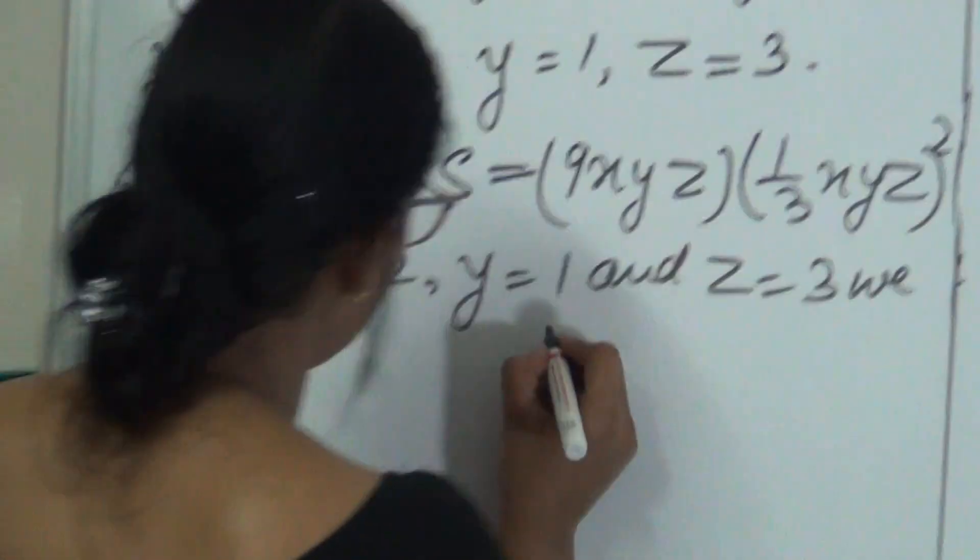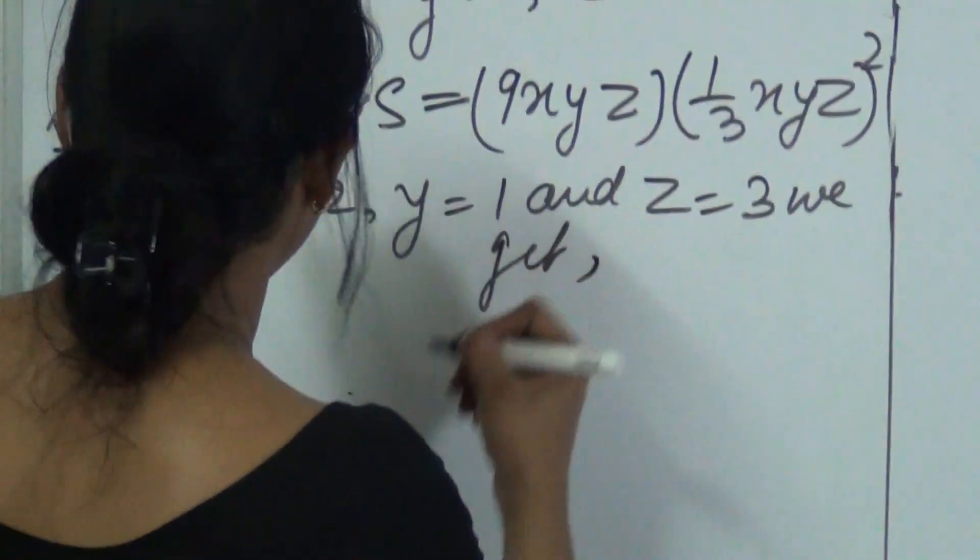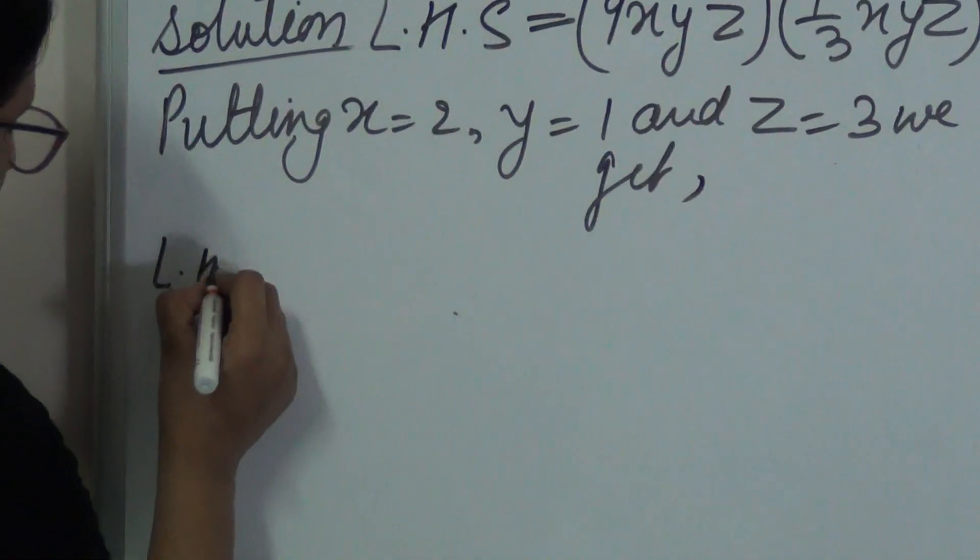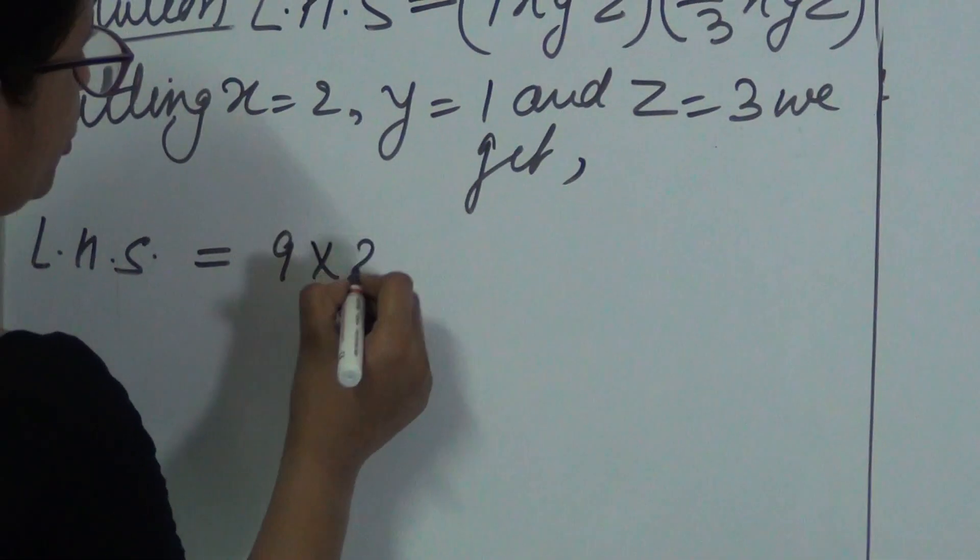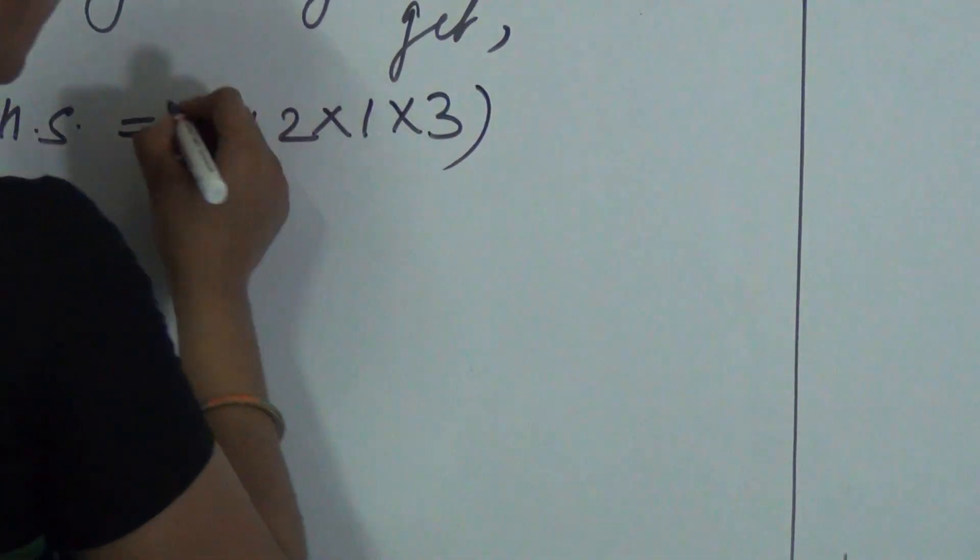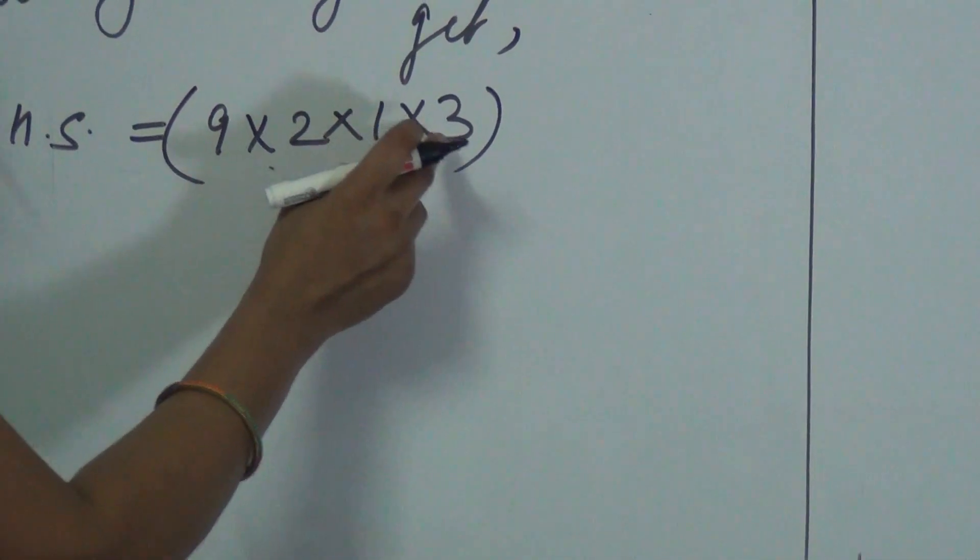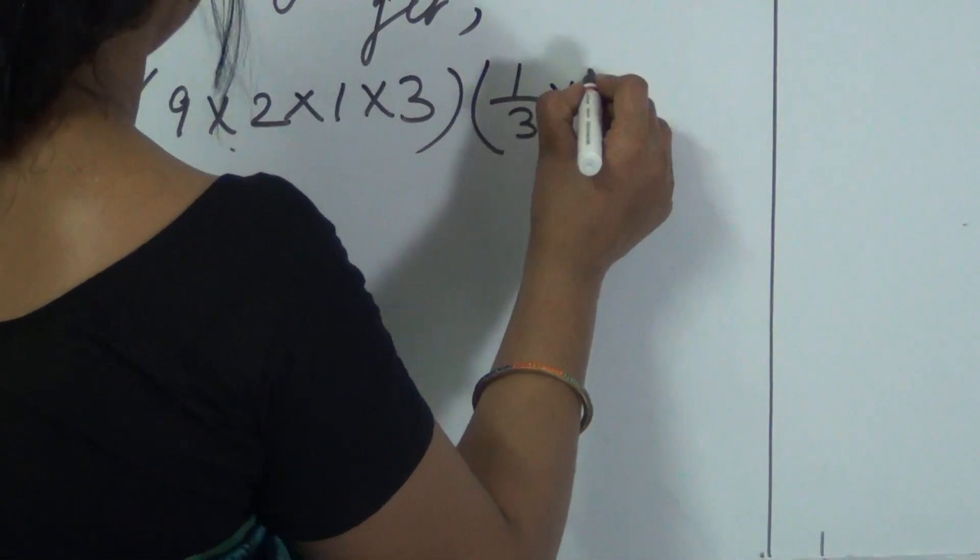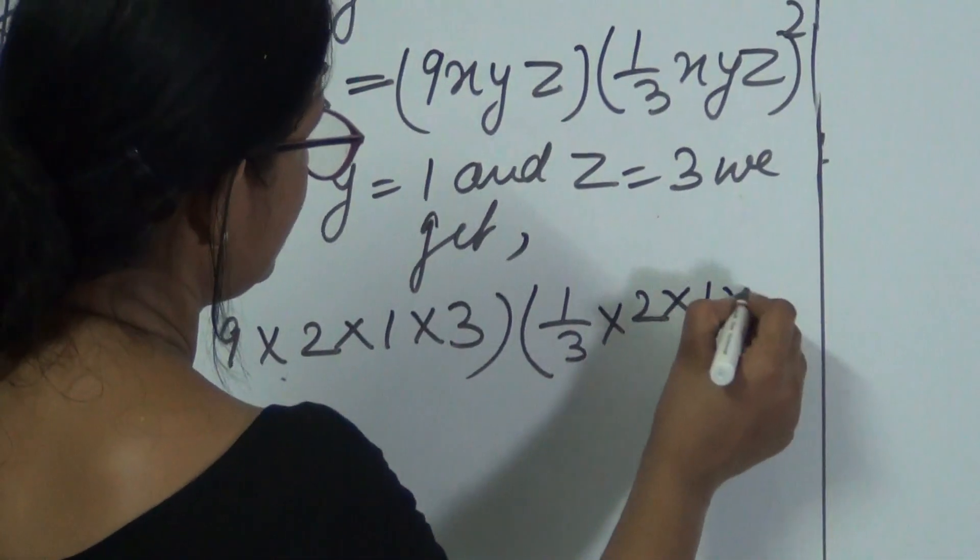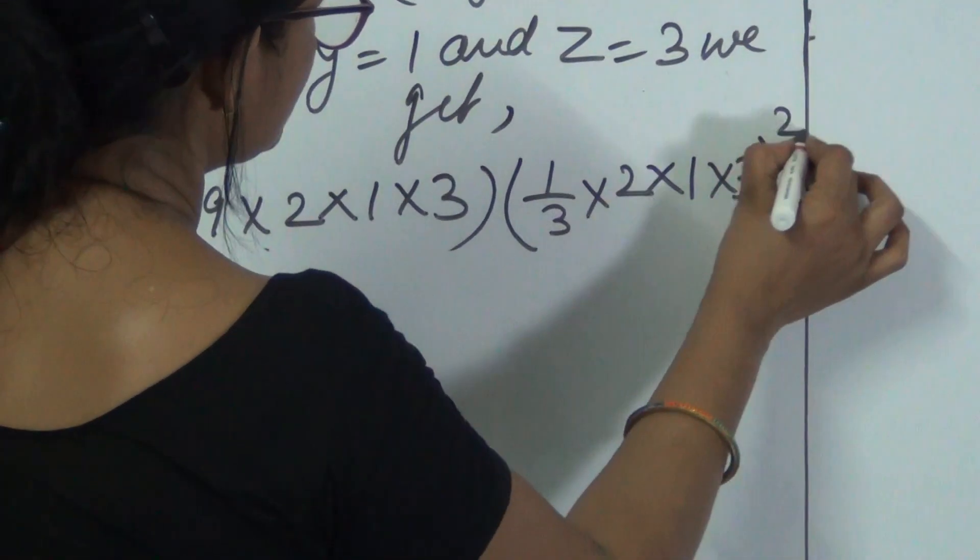We get LHS is equal to 9 into 2 into 1 into 3. The values of X, Y and Z. And here 1 by 3 into X is 2, Y is 1 and Z is 3 whole square.